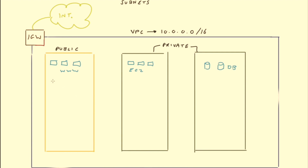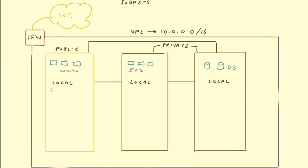As we know, each subnet has a local route that enables all subnets to communicate with each other, and the public subnet also has a route to the internet gateway. When you create a subnet you have to create it in one of the availability zones available within that region. Let's say for example we created all of these subnets in availability zone 1 — we placed them all in the same availability zone.